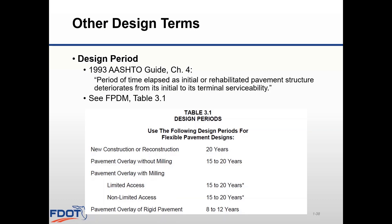Our last term is design period, which is the design life expected for our pavement. The 93 AASHTO guide defines the design period as the period of time elapsed as an initial or rehabilitated pavement structure deteriorates from its initial to its terminal serviceability — in other words, the period of time associated with the change in serviceability, the delta PSI. The department's standard design periods are found in Chapter 3, Table 3.1 of the Flexible Pavement Design Manual and range from 8 to 20 years. Shorter design periods can be used if there are constraints such as curb and gutter or scheduled future capacity projects that justify limiting overlay thickness, and these reasons should be documented in the pavement design package.